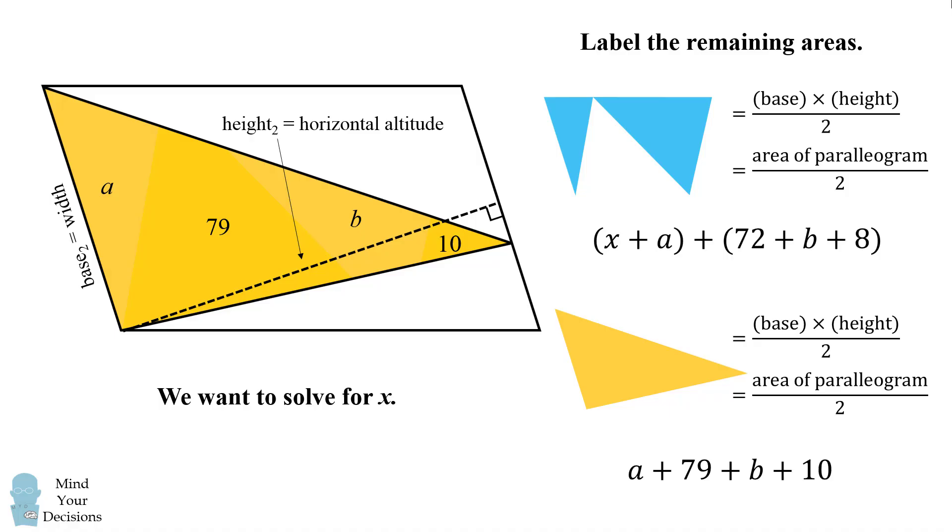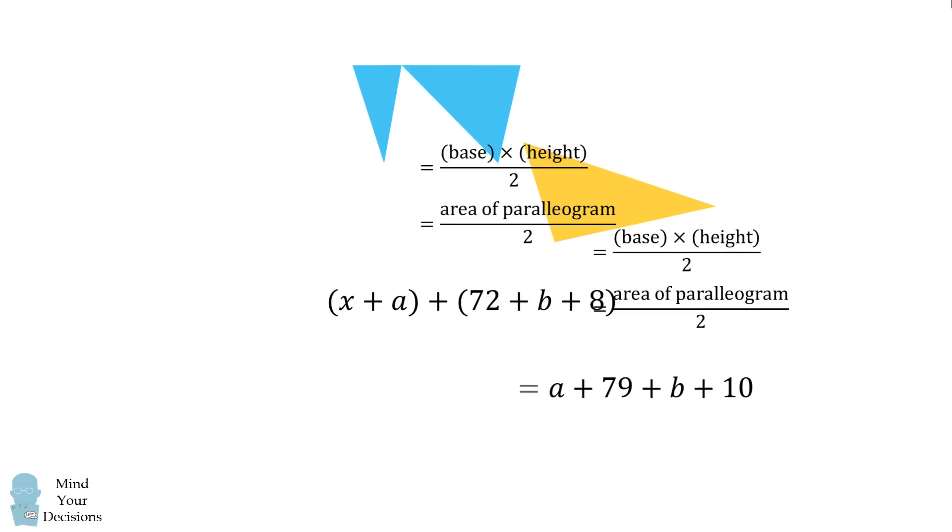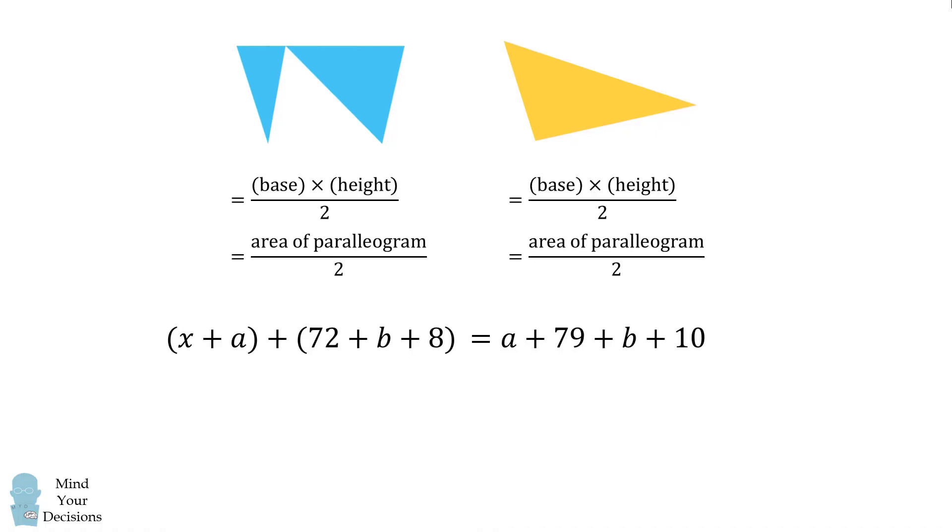Now both of these sets of shapes have an area that's equal to half the area of the parallelogram. So we can set these areas equal to each other. So we equate these two formulas for the half the area of the parallelogram, and now we can solve for x. Notice that on both sides we have an a, so these will cancel. On both sides we have a b, so these will cancel. So we end up with the equation x plus 72 plus 8 is equal to 79 plus 10. We then solve for x to get 79 plus 10 minus 72 minus 8 which equals 9. And that's how we get the magical answer.